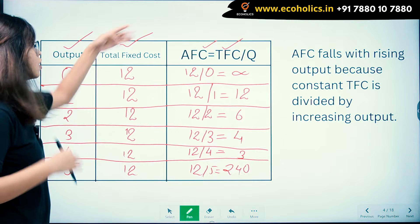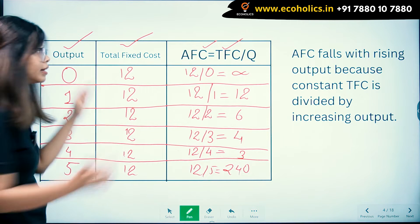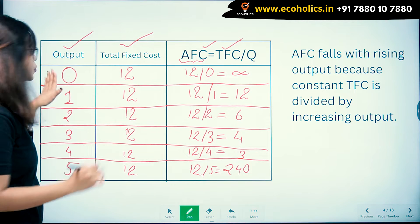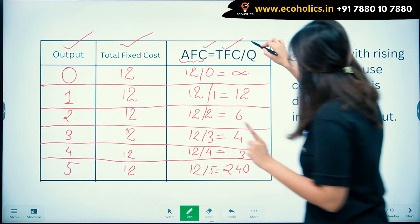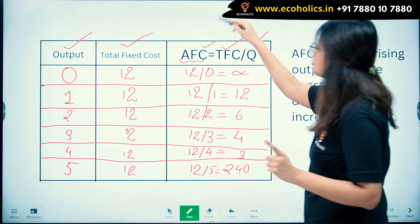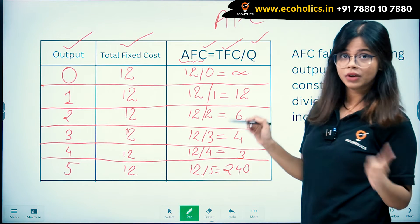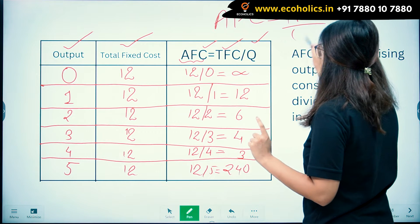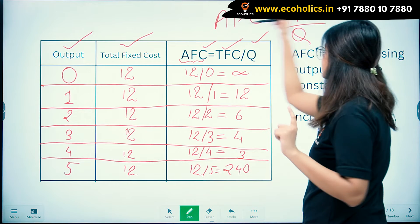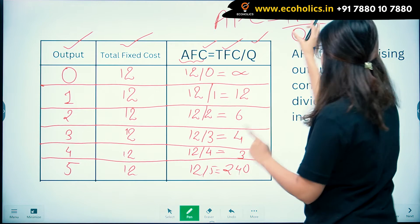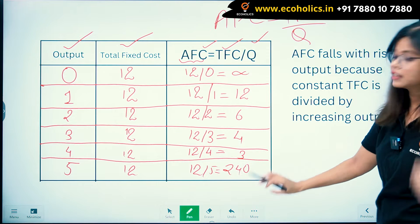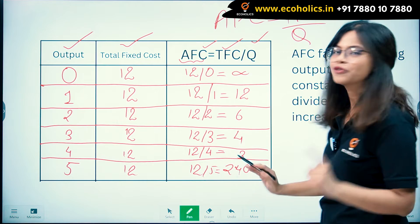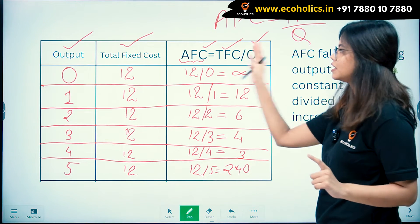This is how we have calculated AFC from total fixed cost and output. First, remember the formula: AFC equals TFC divided by output. We have TFC, we have output — put both values together and solve. That is how AFC is calculated.